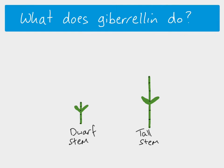This is genetically controlled — the dwarf stem phenotype and the tall stem phenotype are determined by their genotype. However, if you take the active form of gibberellin and add it to a plant with the dwarf stem phenotype and genotype,